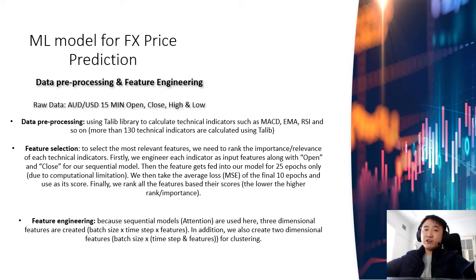We create a function to loop all the features into our predictive model for 25 epochs. Then we calculate the average loss of the last 10 epochs and use that to rank all the features from the most important to the least important. We choose the top eight most important features as our input features.